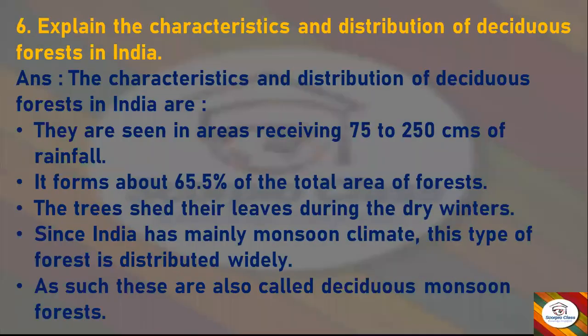Explain the characteristics and distribution of deciduous forests in India. Answer: The characteristics and distribution of deciduous forests in India are — they are seen in areas receiving 75 to 250 cm of rainfall.